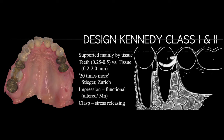Because this distal extension partial denture moves up and down about 20 times more than a Kennedy class 3 or 4 tooth-supported case, the abutment tooth holding the prosthesis has a much greater risk in terms of force transfer. Therefore, you need to choose very carefully about the direct retainer so that the load will not adversely affect the abutment tooth.